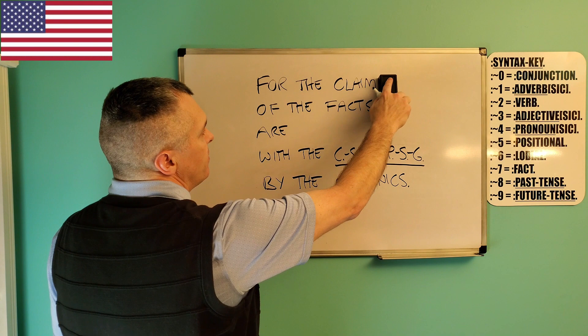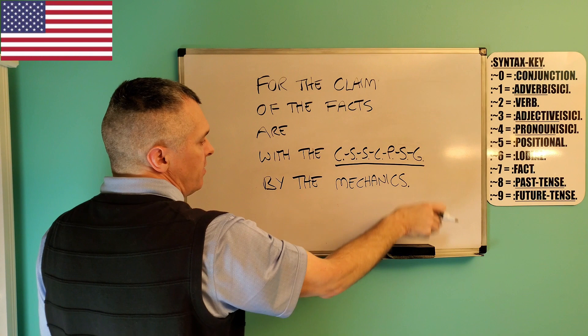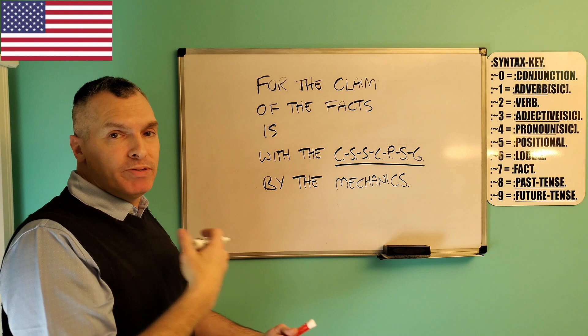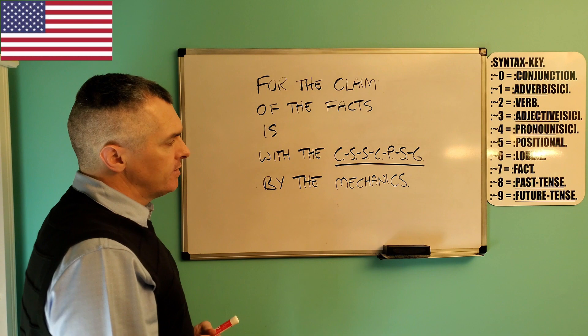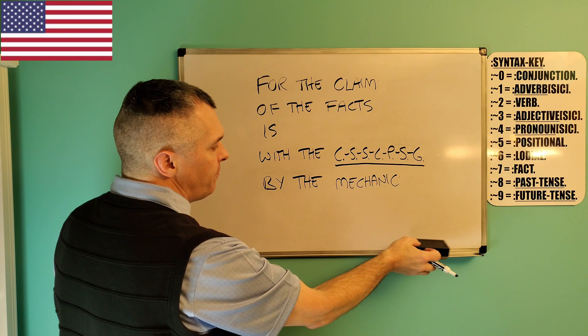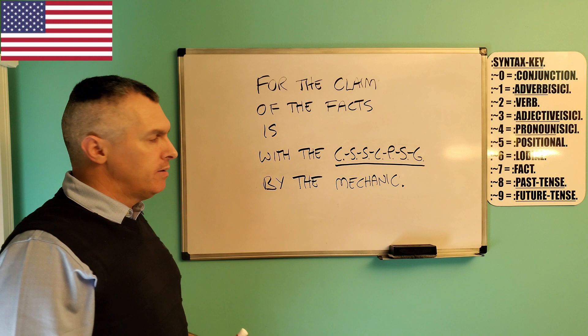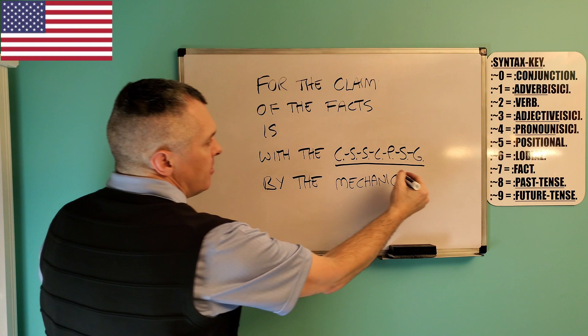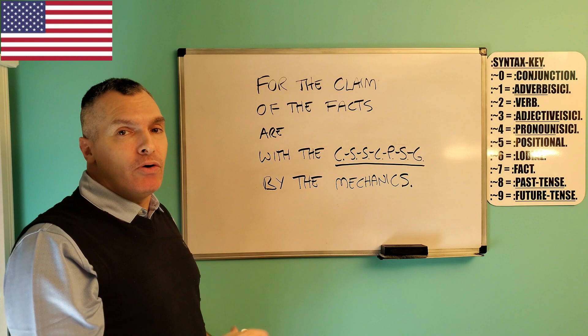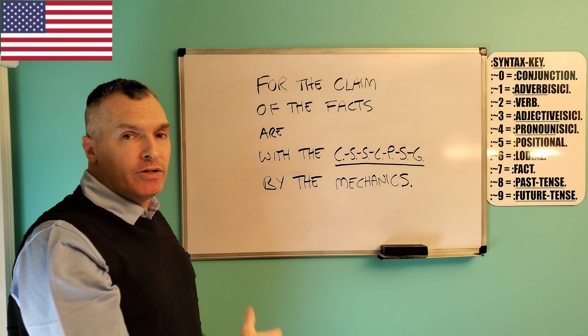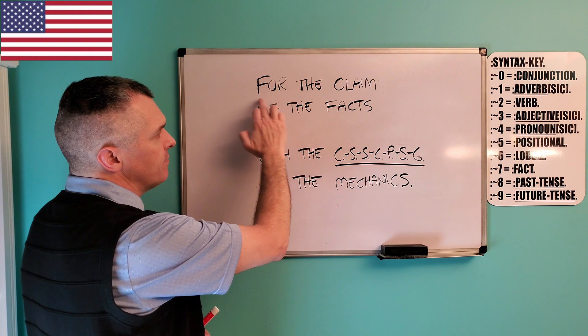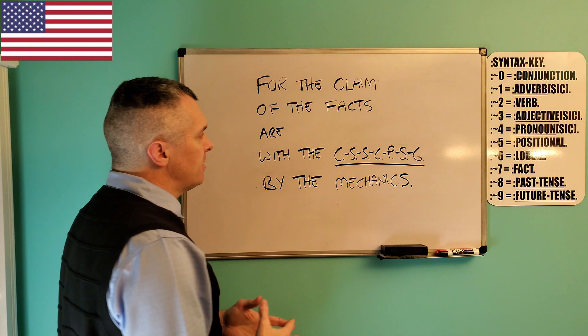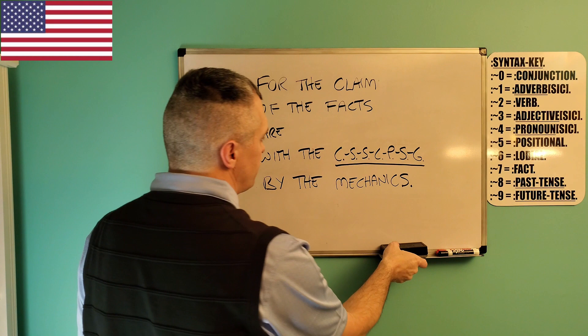Now if this is singular — 'for the claim' — and if you read it backwards, this would have to move to a condition of singularity as well. Because 'mechanics' is plural, in order for the verb to stay singular it would have to be 'by the mechanic,' which is singular. Going forward: cause, concern, verb, possessive, authority. Going backwards: cause, concern, verb, possessive, authority. That is how the plurality and singularity of the verb works in a correct sentence structure.